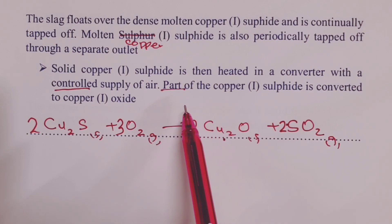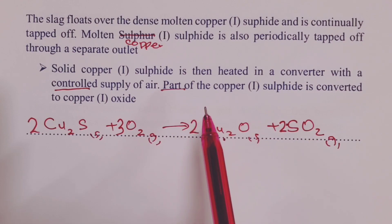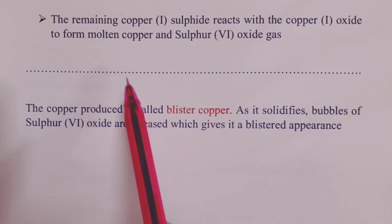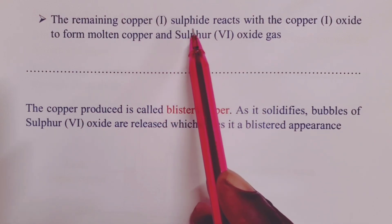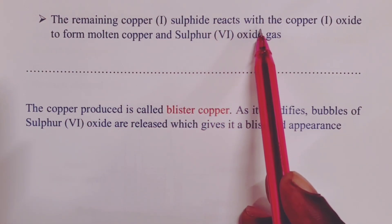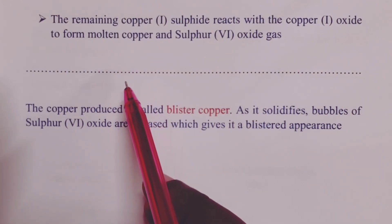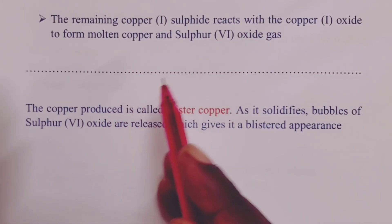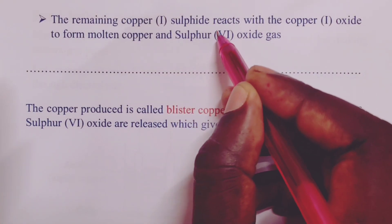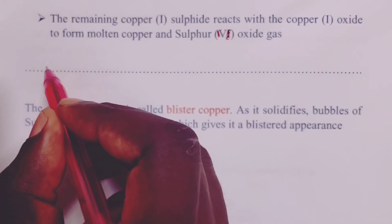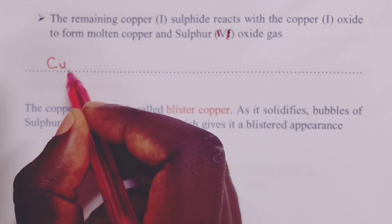Once we have our copper-1-oxide here, the remaining part of copper-1-sulfide will now be used to reduce it to copper. Let's have a look at how that happens next. The remaining copper-1-sulfide will then react with copper-1-oxide to form molten copper and more sulfur-4-oxide gas.